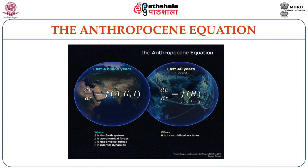Look at this equation, known as the Anthropocene Equation, which came very recently. The change in the earth system — earlier it was thought that changes could only occur if there were astronomical, geophysical, or internal stresses. That is why the rate of change in the earth system was considered a function of AGI. But now, whether human actions can make an impact on the earth system — that is why, over the last 40 years, it is more a function of human action. The rate of change (d/dt) is a function of H.